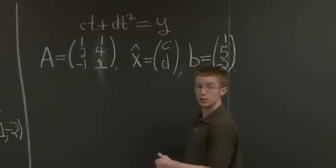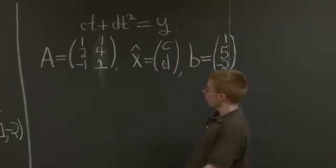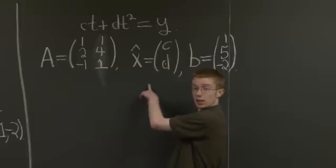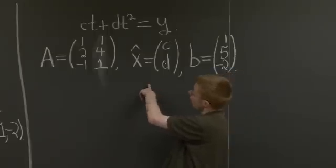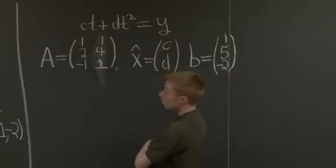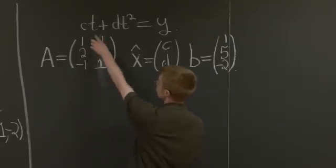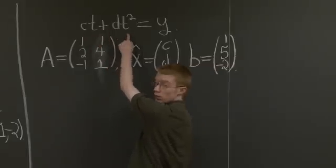Okay, why did I set this problem up like that? Well, multiply A times x hat. Okay, the first coordinate of A times x hat is 1 times c plus 1 times d. It's just the same as plugging in this first point into the left-hand side of this equation.